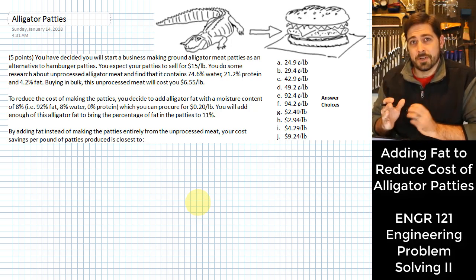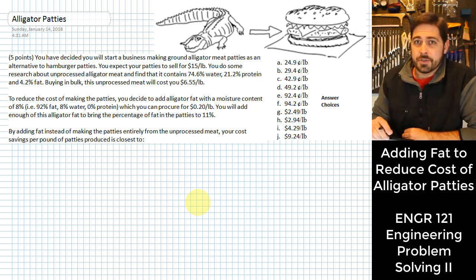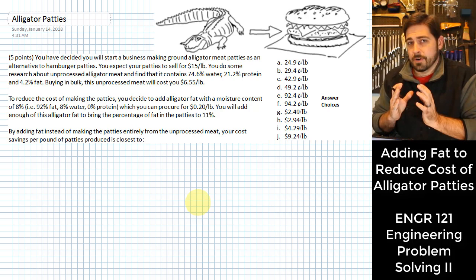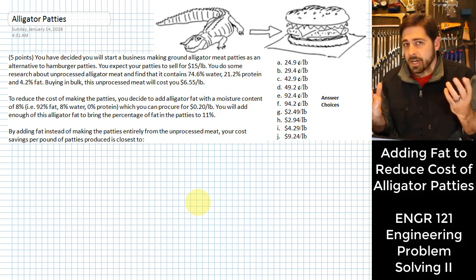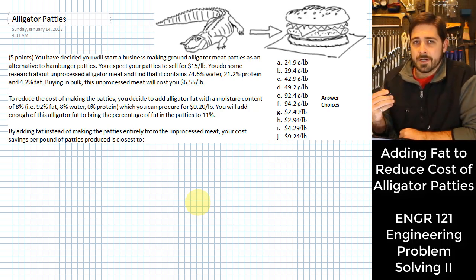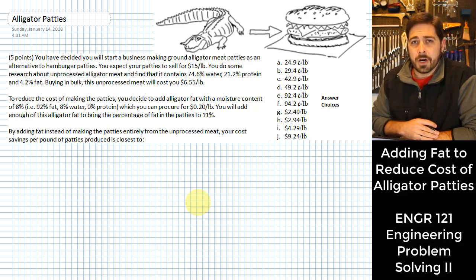So let's face it, you're always looking for some kind of side business you can do to earn a little bit more cash. And so the most recent idea that you've had is you're going to try to start making alligator patties. You figure the timing is right, everybody wants new and interesting kinds of food products, let's make alligator patties.